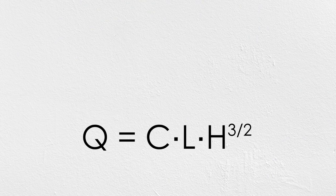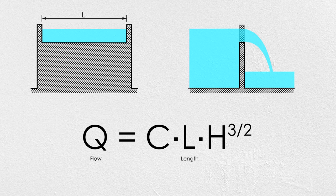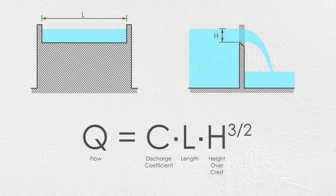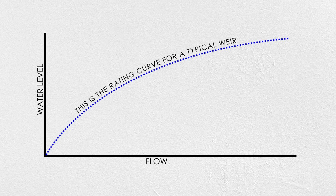This is the equation for flow over a weir. We're not going to do any calculations here, but it's important to know the factors that govern the performance of our hydraulic structure. This equation says that the amount of flow that passes over a weir depends on three factors: the length of the weir, the height of the water level above the crest of the weir, and a coefficient which changes depending on the geometry of the weir. The graph of a hydraulic structure's flow versus water level is called its rating curve, and this is the rating curve for a typical weir.